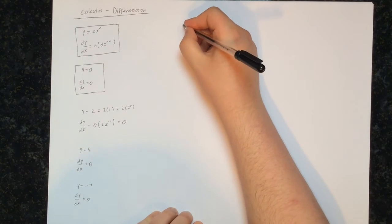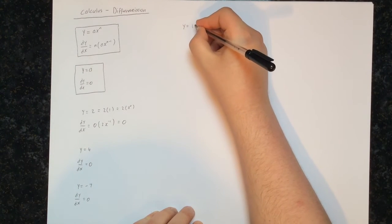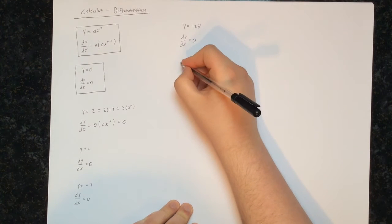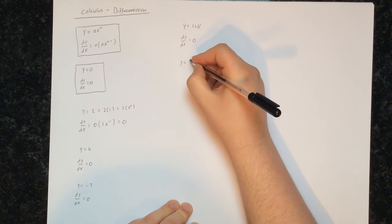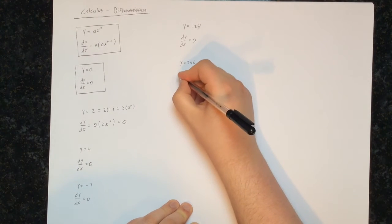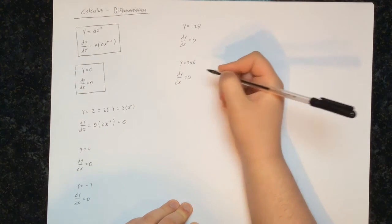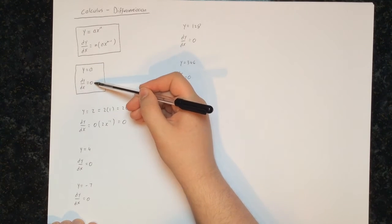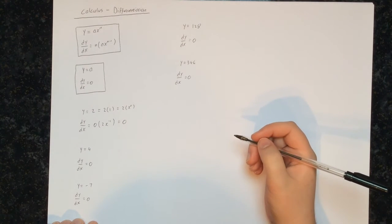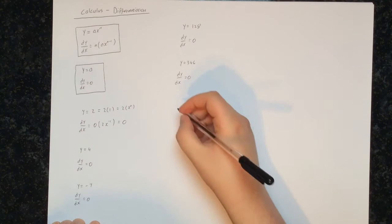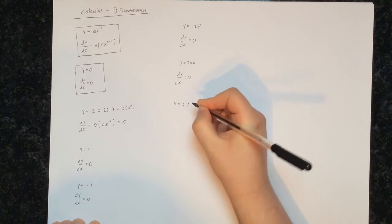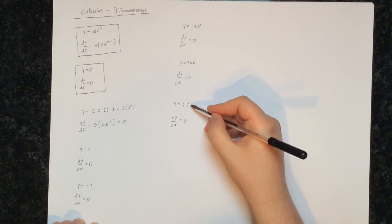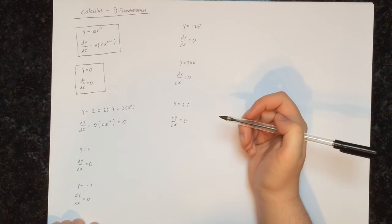This is an easy pattern: whenever y is equal to some number, the derivative will be equal to 0 for any constant — it doesn't matter which number we pick, this will always be the case. So for y equals 346, dy/dx will be equal to 0. We're just repeatedly using this formula that whenever y is a number, then dy/dx will be 0. Another way of saying that is: the derivative of any constant is equal to 0. So for y equals 27, dy/dx is again going to be equal to 0.